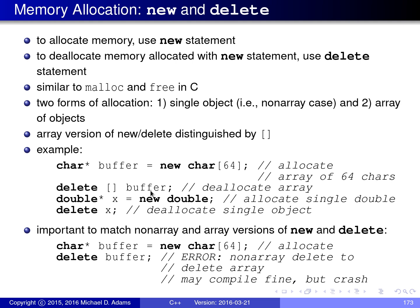To allocate a single item — for example, a single double — we say new double with no square brackets, which is the non-array version of new. It returns a pointer to the allocated memory, which we save into a pointer variable called x. To free that memory later, we say delete x — the non-array delete, because there are no square brackets. It's important to match these: if you allocate with array new, you must free with array delete; if you allocate with non-array new, you must free with non-array delete.